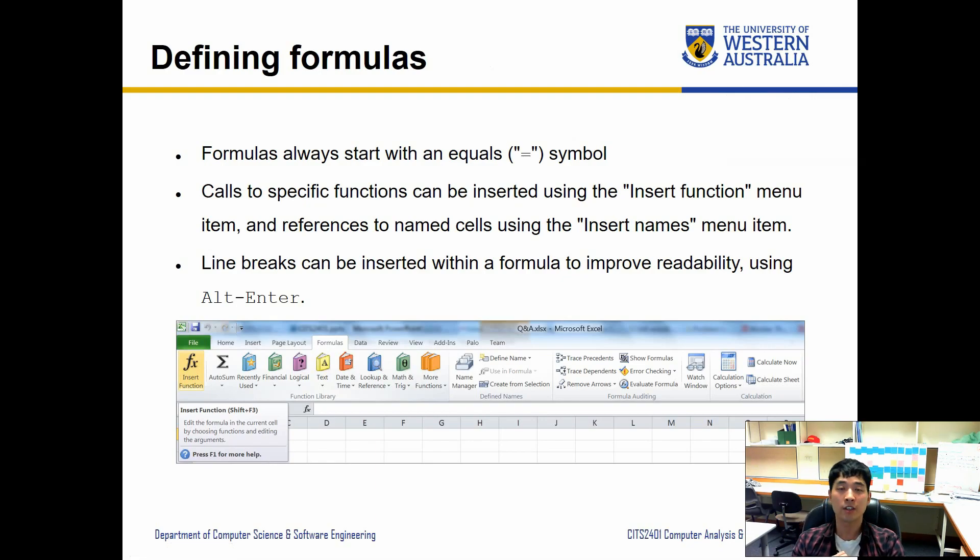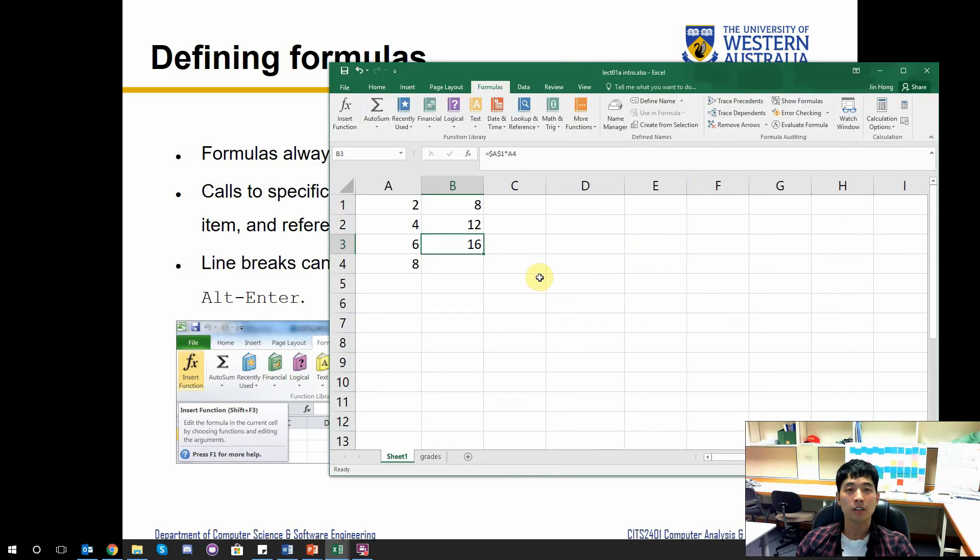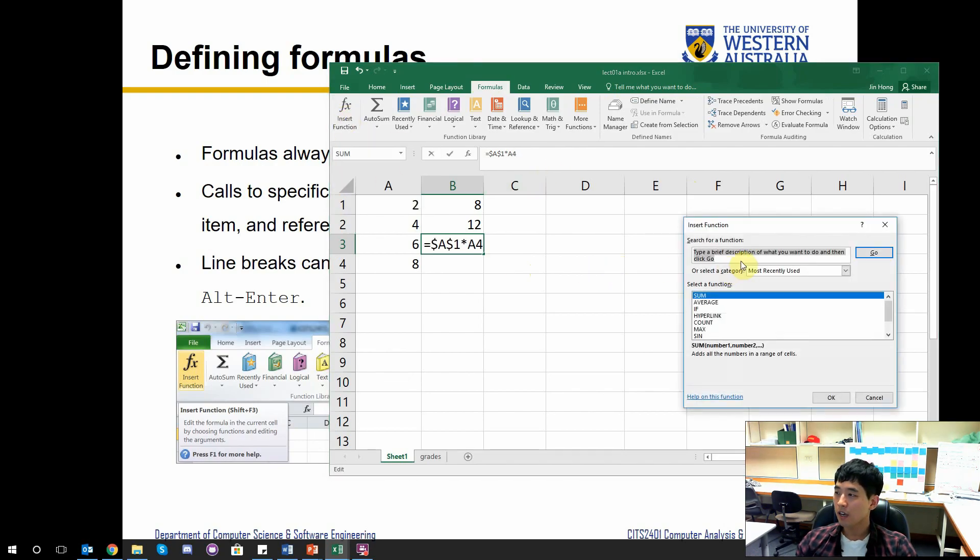So how can we define different types of formulas if you don't really know what they look like? Well, Excel does provide us some basic search tool for you to search the formula you need to use. Of course all the formulas will start with an equal sign. Specific functions can be inserted using the insert function menu as well. So inside the formulas we have the insert function. If you press this, you can either search for a function.